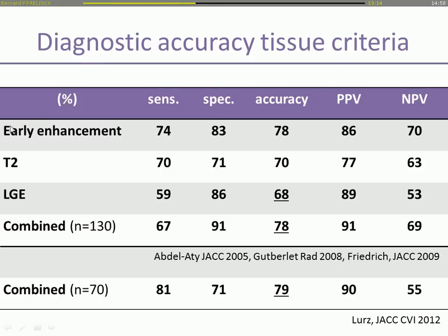Combining these three techniques — early enhancement, T2-weighted imaging, and late gadolinium enhancement — gives in pooled data a sensitivity of 67%, a specificity of 91%, and an accuracy of 78%, with a positive predictive value of 91% and a negative predictive value of 69%. If you only use late gadolinium enhancement, you will have an accuracy of only 68%. In more recent data published by Lurs in JACC Cardiovascular Imaging, 70 patients were studied with acute myocarditis proven by myocardial biopsy, with a sensitivity of 81%, a specificity of 71%, and an accuracy of 79%.